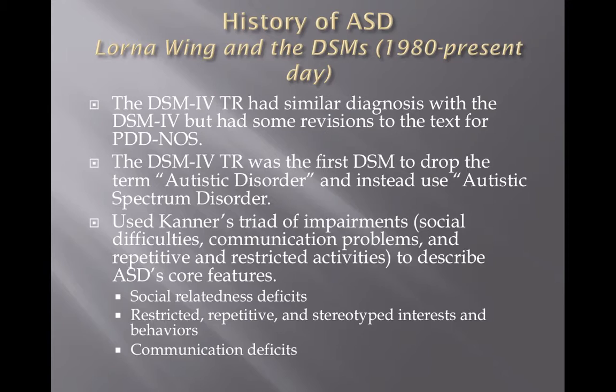Then we see the DSM-IV-TR, which had a similar diagnosis to the DSM-IV but with some revisions to PDD-NOS. It was, however, the first one to drop autism and actually use the term Autistic Spectrum Disorder — the first to acknowledge that these symptoms exist on a spectrum. However, it still used categories such as Asperger's disorder and PDD-NOS to identify individuals who didn't meet the full ASD criteria. They also started using Wing's triad of impairments, which includes social difficulties, communication problems, and repetitive and restrictive activities, to describe ASD's core features: social relatedness deficits, restrictive and repetitive and stereotyped behaviors, and communication deficits.